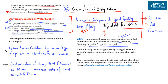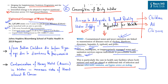The WHO highlights that absent, inadequate or improperly managed water and sanitation services expose individuals — especially children and women — to preventable health risks. This is particularly the case in healthcare facilities, where patients and staff face additional risk of infection and disease when water, sanitation and hygiene services are lacking. Therefore, water, sanitation and hygiene services are critical for universal health coverage.